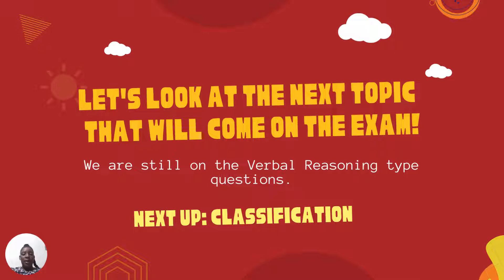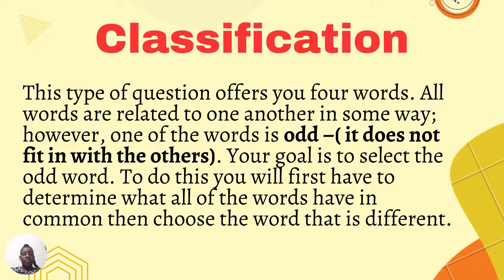Let's look at the next topic that will come on the ability test examination. We are still on the verbal reasoning type questions. Next up is classification. In the classification type of questions, we are going to be given four words. All of the words are related to one another in some way. However, one word is odd — it does not fit in with the others. Your goal is to select the odd word by first determining what all of the words have in common, then choosing the word that is different.